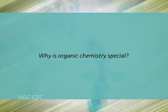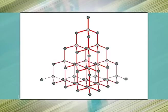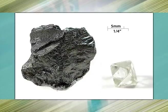Organic chemistry is now broadly defined as the chemistry of carbon-containing compounds. Why is organic chemistry so special? One very important feature is that carbon-carbon bonds are strong, so long chains or rings of carbon atoms bonded to one another are possible. Diamond and graphite are two familiar examples.